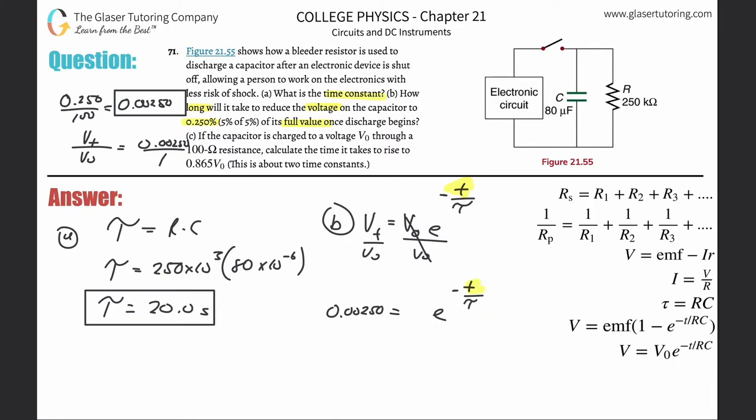Take that and plug it into your calculator. So ln of 0.0025. We get a nice negative number. This comes out to be negative 5.99 or so. The ln cancels the E and the whole exponent comes down: negative T over tau.